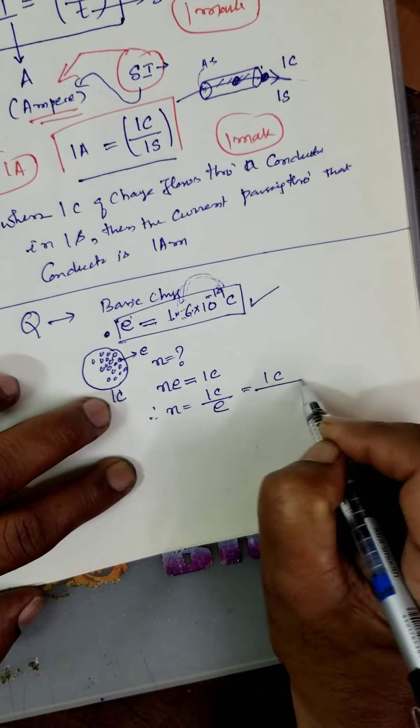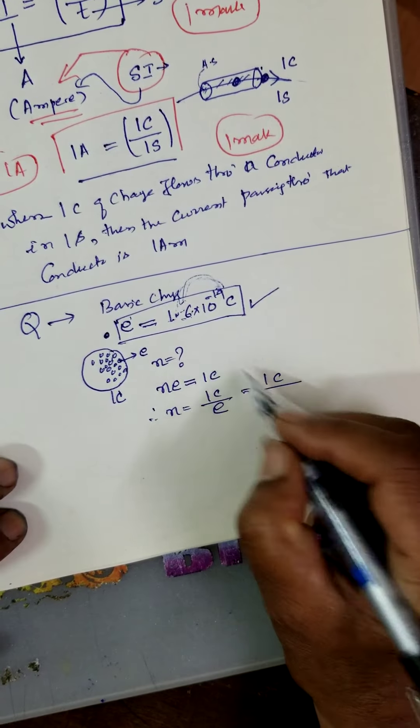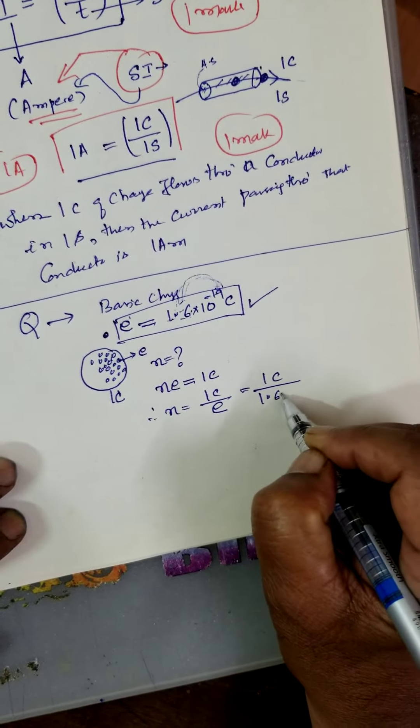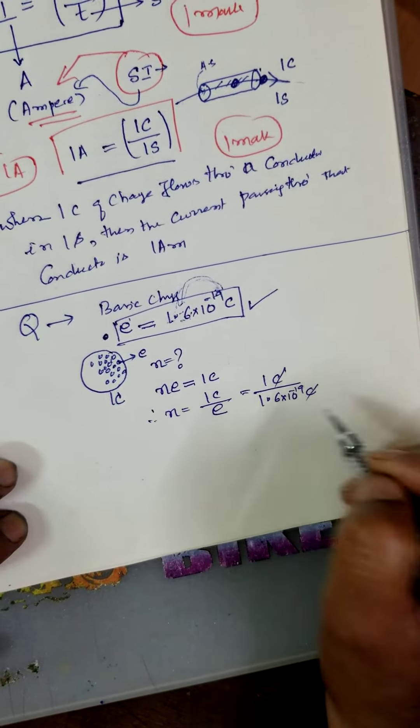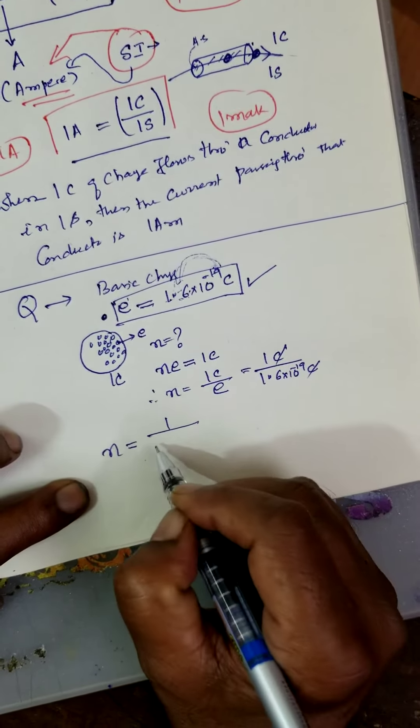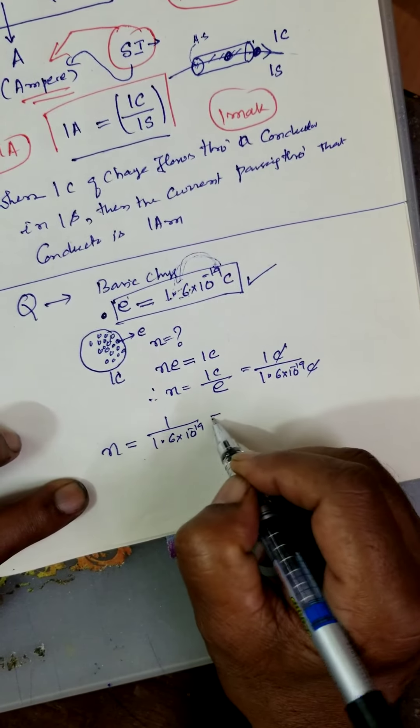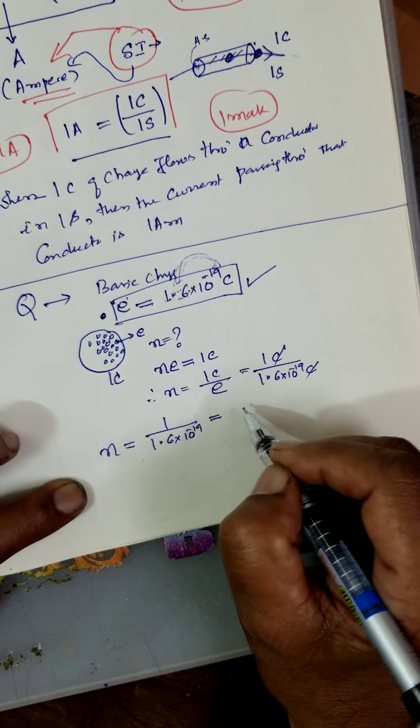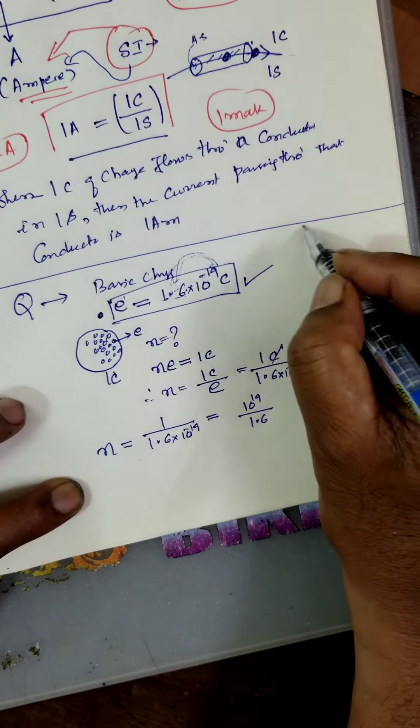Therefore, one coulomb divided by electronic charge of 1.6 into 10 to the power of minus 19 coulomb. Coulomb gets cancelled. Therefore, number of electrons is equal to 1 by 1.6 into 10 to the power of minus 19. You take to the numerator, 10 to the power of 19 by 1.6. Remember this.